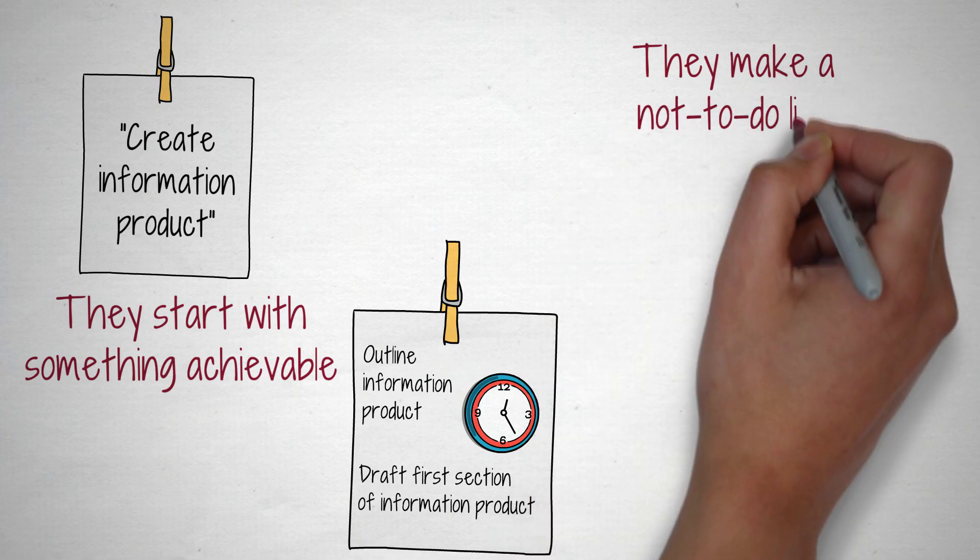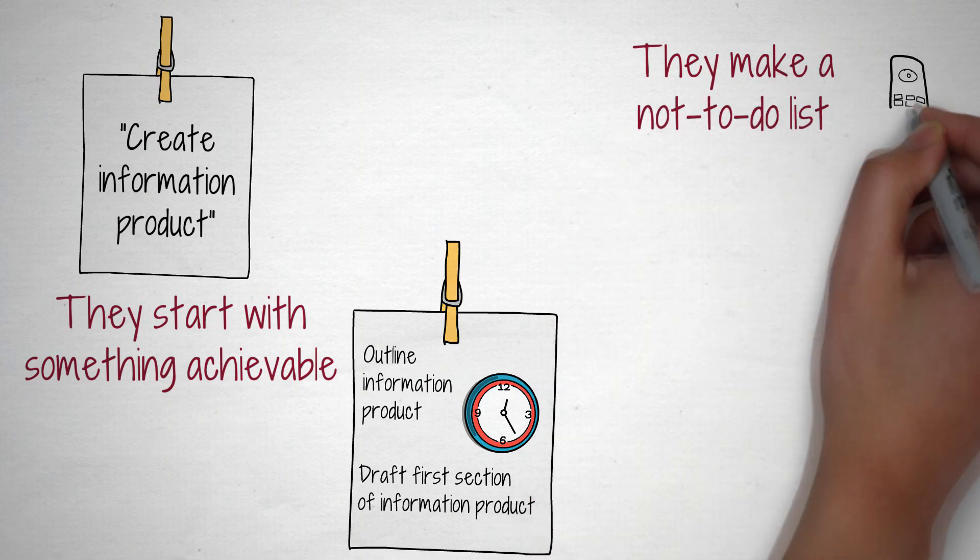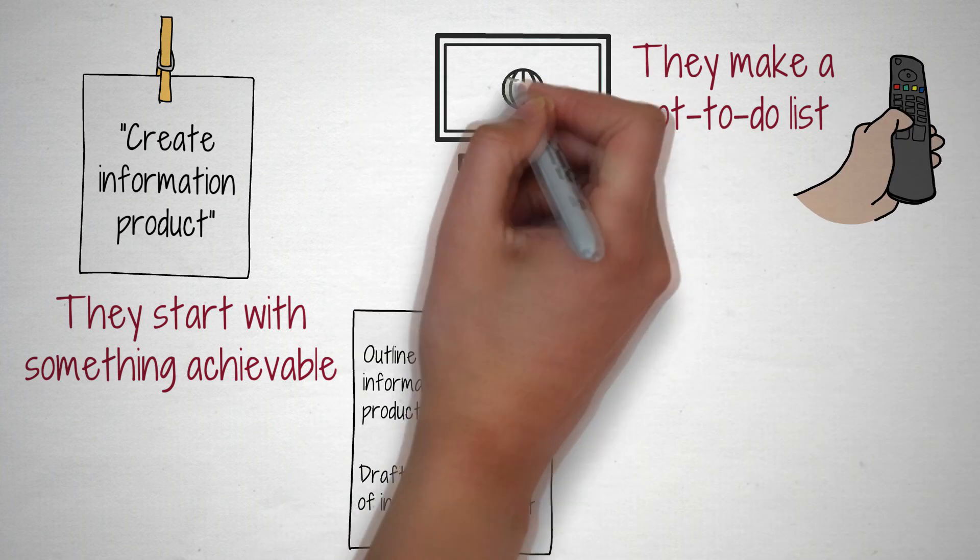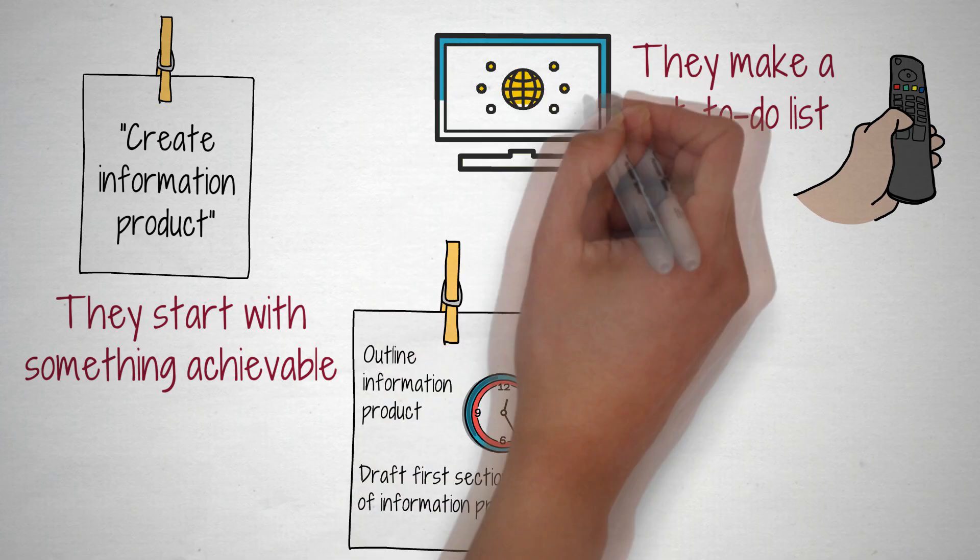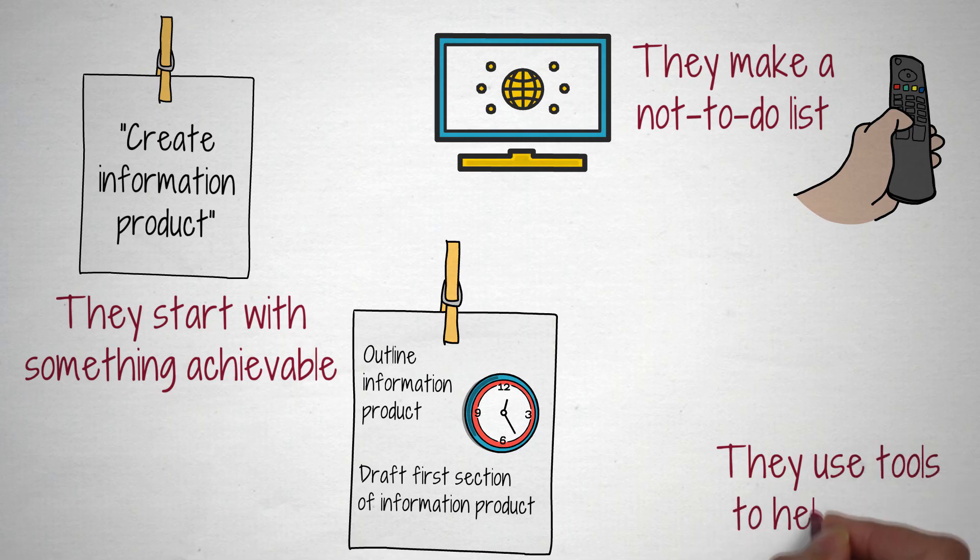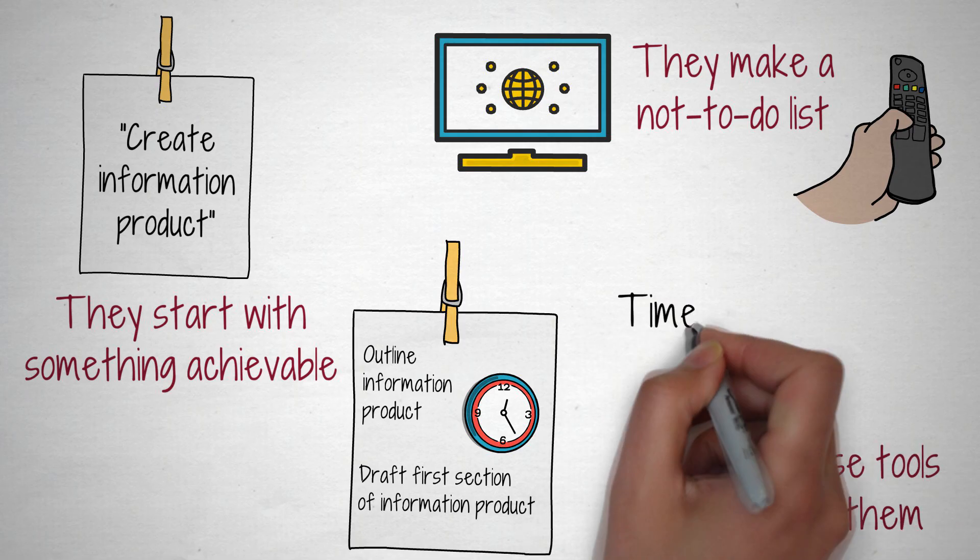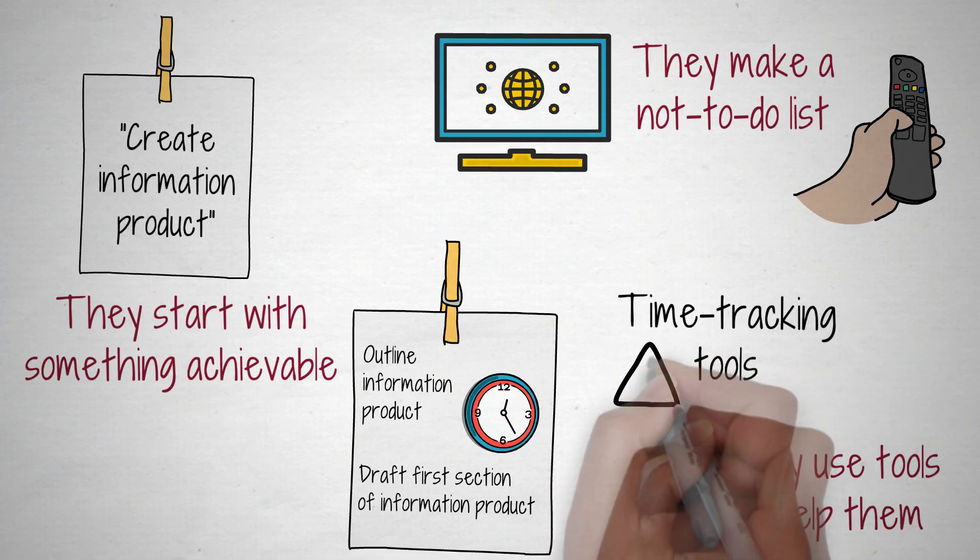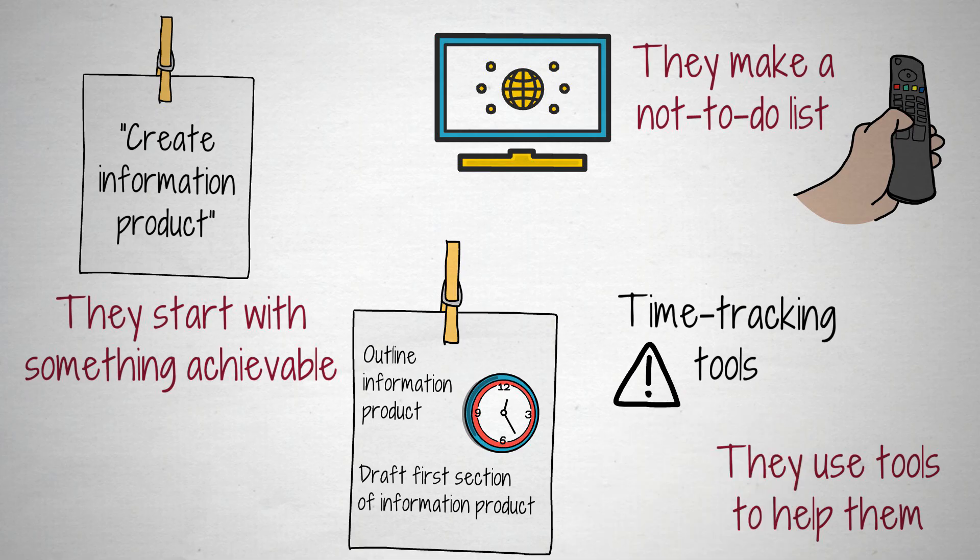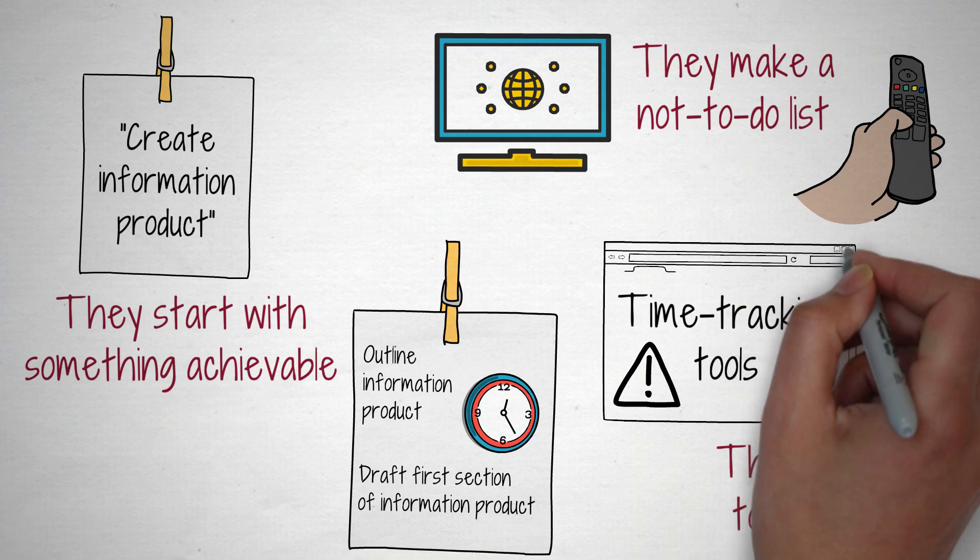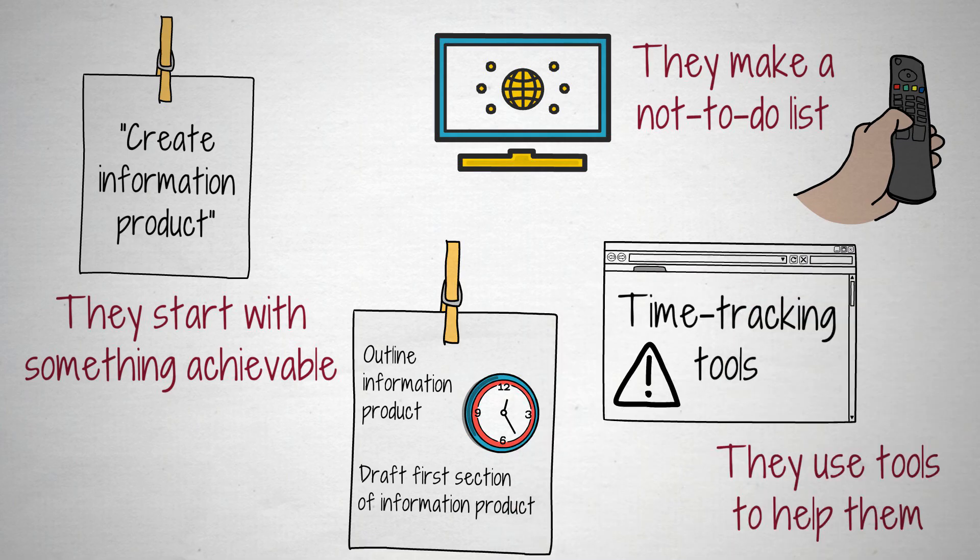They make a not-to-do list. Mine includes watching TV and internet surfing during the day, watching any TV I didn't actively plan to watch, plus email and social media checking during work hours. They use tools to help them. Time tracking tools can help you stay on task. Online tools like iDefender or Big Stretch Reminder remind you to take regular breaks, but then return to work straight away. By working in quick sprints like this, I can sometimes achieve more in a few 40-minute sessions than I would trying to work solidly all day.